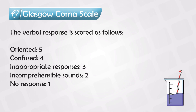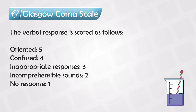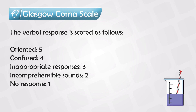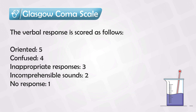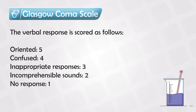In the verbal response, the patient gets five points if they are conscious and oriented, four points if they are confused, three points if they have inappropriate responses, two points if they have incomprehensible sounds, and one point if they have no response at all. For example, if you ask a patient what time it is and they respond by saying 'the color is blue,' that's an inappropriate response so they get three points. If they just mumble incoherent sounds, they get two points.